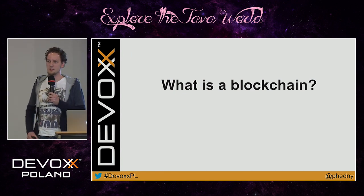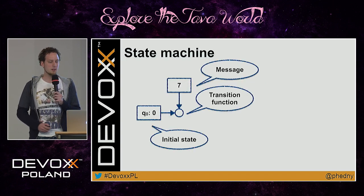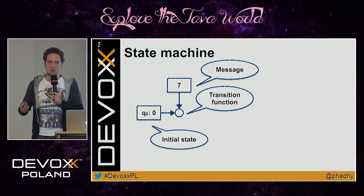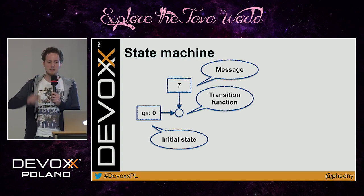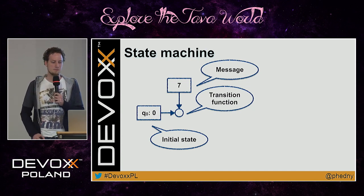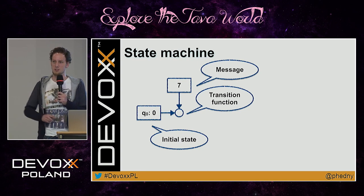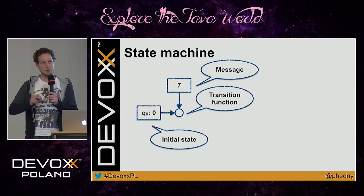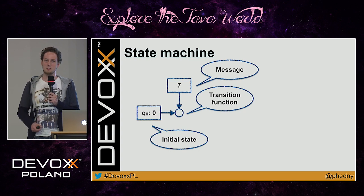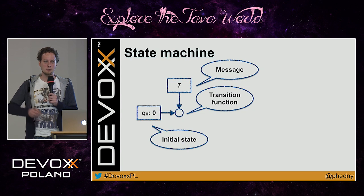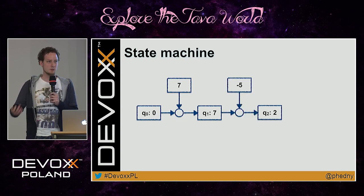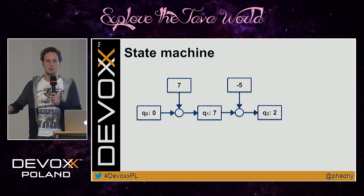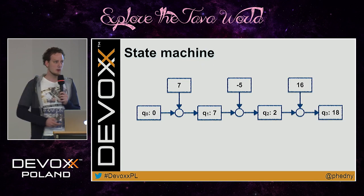I'm going to tell you what a blockchain is by introducing five ingredients found in every blockchain. The first is a state machine. A state machine has a state you start in — the initial state — and messages going in. A transition function takes the current state and a message and produces a new state. For example, if the state is 0 and a message of 7 comes in, the transition function adds them, giving a new state of 7. Sending a message of minus 5 then gives a state of 2.